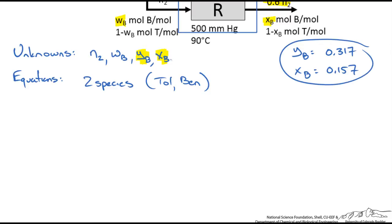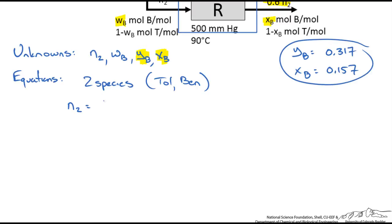Remember, we could write two balances: an overall or either species balance. Another thing to recognize is if we do an overall balance, the incoming molar flow rate N2 is going to equal 0.4N2 plus 0.6N2. So we have shown that N2 equals N2.